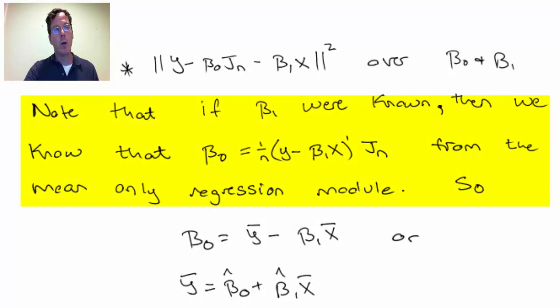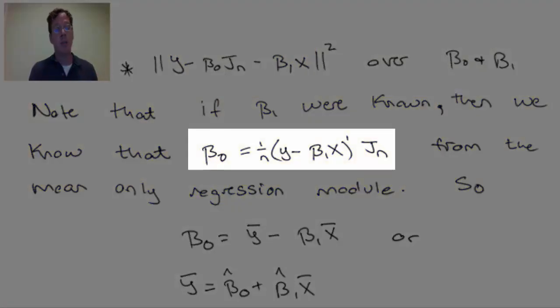Notice, if beta 1 were known, we could just subtract beta 1-hat from y, and we have a new vector, and we're back to the mean-only regression problem again, and we know the solution to that. So we know that the beta 0 that would solve that would just be 1 over n times our new outcome vector y minus beta 1-hat transpose times jn, or in other words, the average of those values.